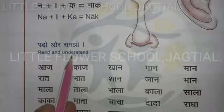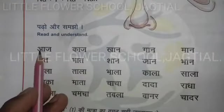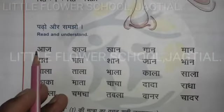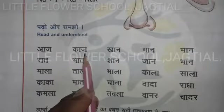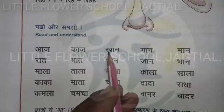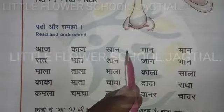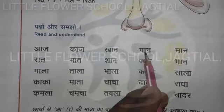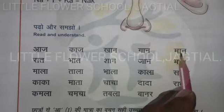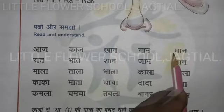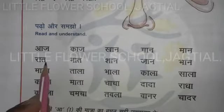Padhao aur samjho - read and understand. Aaj: a plus aa matra, a plus ja equals aaj. Ka plus aa matra, ka plus ja equals kaan. Gaan: ga plus aa matra, ga plus na equals gaan. Maan: ma plus aa matra, ma plus na equals maan. Ra plus aa matra, ra plus ta equals raat.